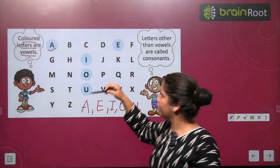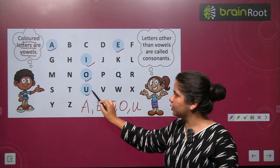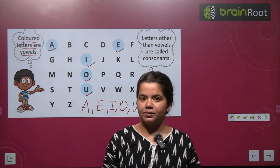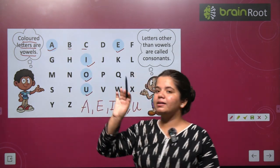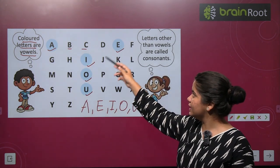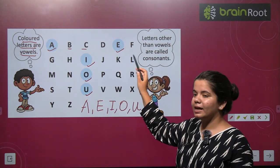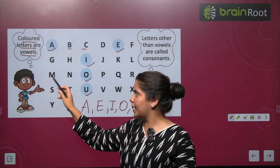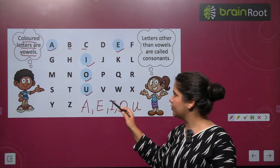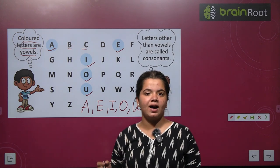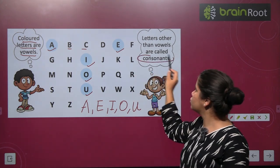A, E, I, O, U — five vowels. The remaining letters are not vowels. B, C, D, F, G, H, J, K, L, M, N, P, Q, R, S, T, V, W, X, Y, Z — these are all consonants.